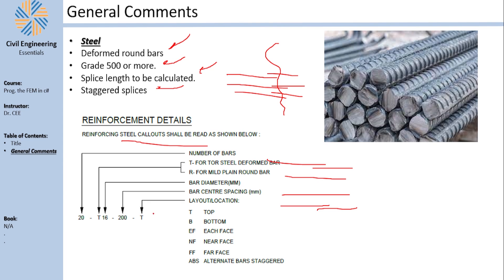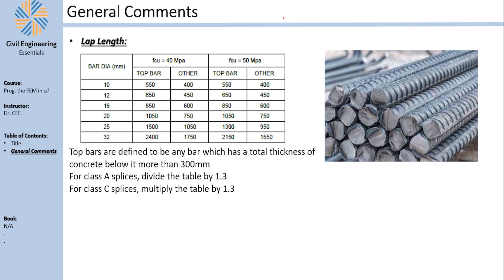The call-out notation for steel comes from the British or Eurocode: number of bars, T for deformed steel, diameter in mm, center-to-center spacing, and position designation (T for top, etc.). For splice length, you provide a pre-calculated table on the drawings for different concrete strengths. The default I have is Class B; for Class A divide by 1.3, for Class C multiply by 1.3. You always provide this splice length table in your drawings.